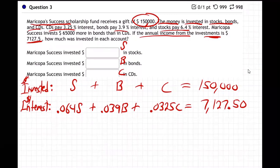That's two equations, but we have three letters, so we need a third equation. The unused fact is that Maricopa invests $65,000 more in bonds than in CDs. A very common mistake is writing this as B + 65,000 = C — but that's wrong, and I've seen it so many times I really want to help you avoid it.